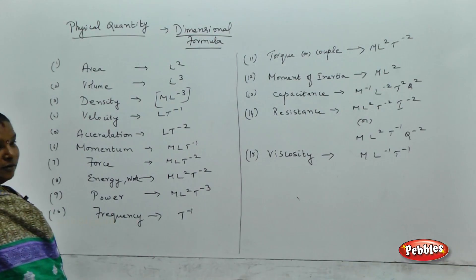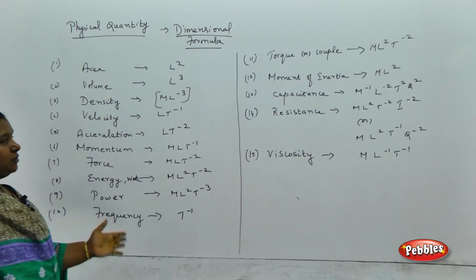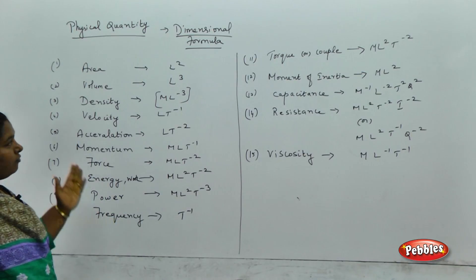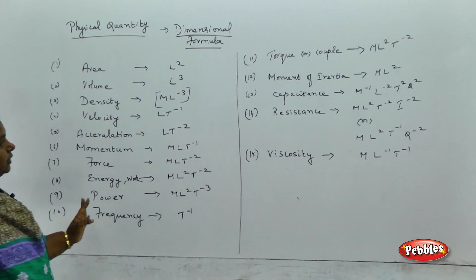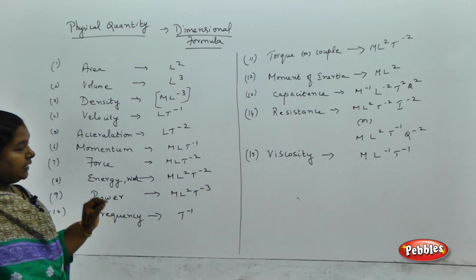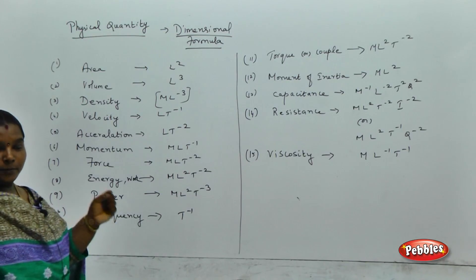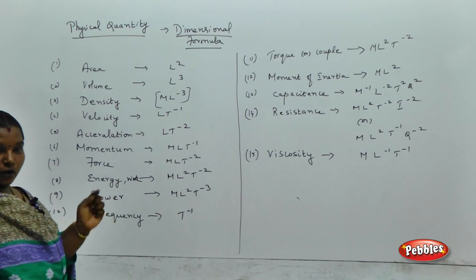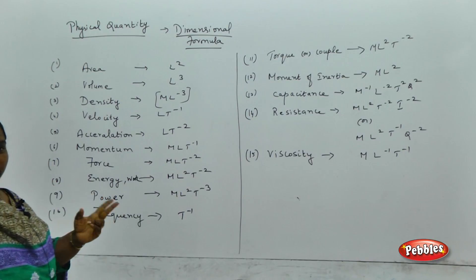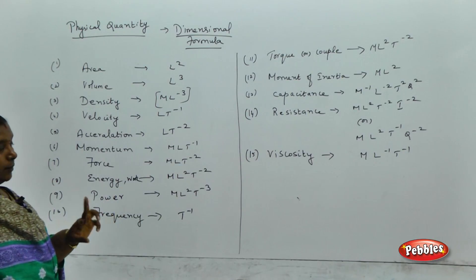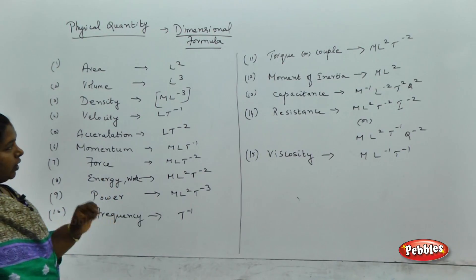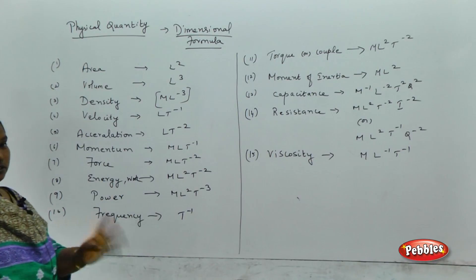Here comes the dimension for various physical parameters. In the last session we discussed the derivation of dimensional formulas using the formula method and also using SI units. There are only two methods to derive the dimension formula for physical parameters: one by using the formula, the other one by using the SI unit.